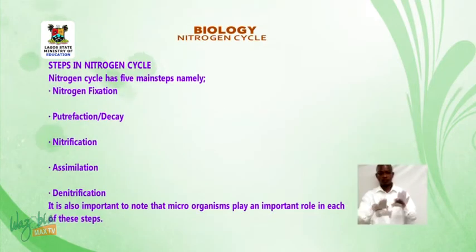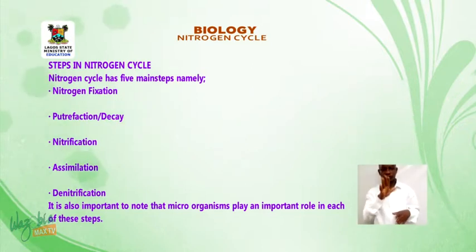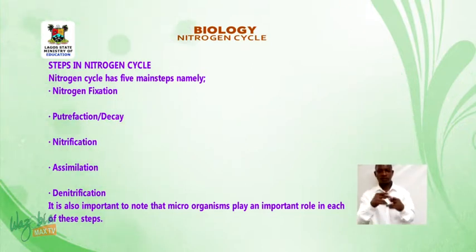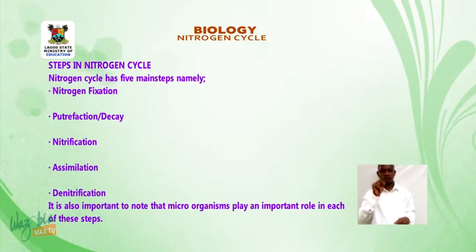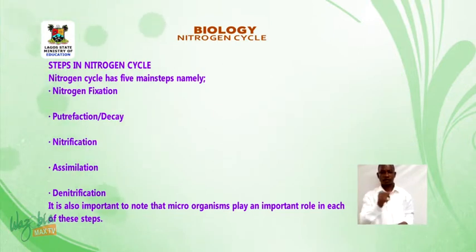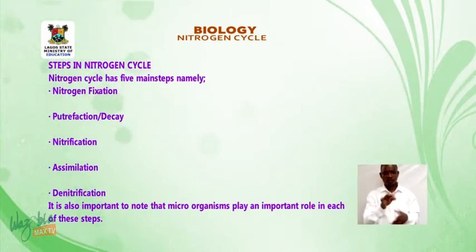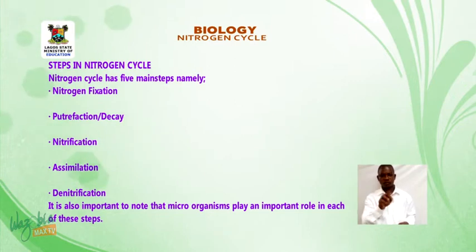Steps in the nitrogen cycle. The nitrogen cycle has five main steps, namely: nitrogen fixation, putrefaction or decay, nitrification, assimilation, and denitrification. It is also important to note that microorganisms play an important role in each of these steps.